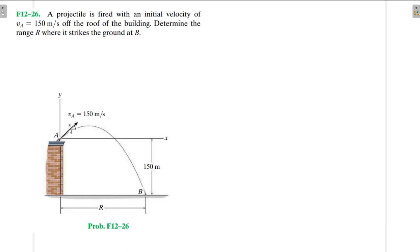Hello, welcome to this screencast. We're going to be solving an engineering mechanics problem. It reads: a projectile is fired from an initial velocity of v_a equal to 150 meters per second off the roof of a building. Determine the range where it strikes the ground at B. We have been asked to find the range, which is the distance from point A to point B.